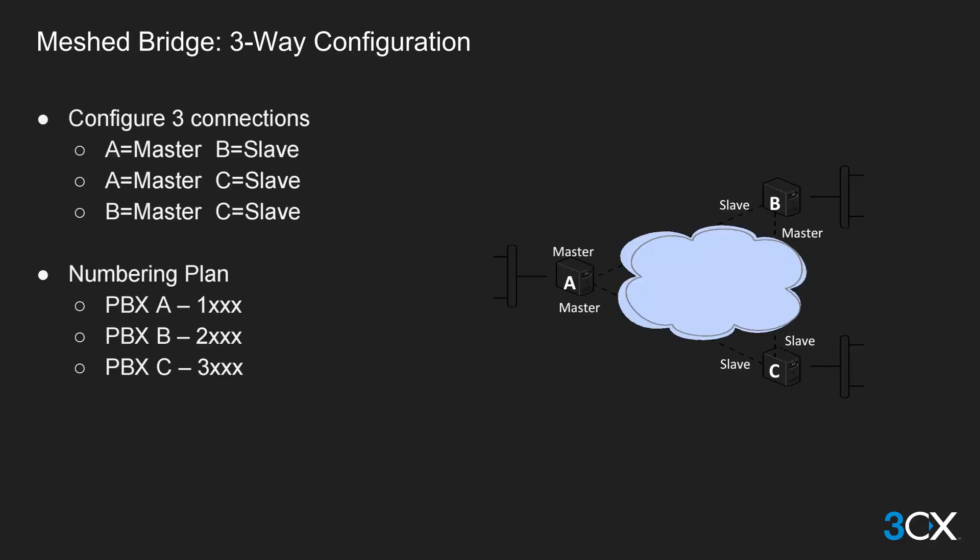For a fully mesh setup with three PBXs, each connection between all three PBXs needs to be configured. PBX A will be the master bridge for connections to both PBX B and PBX C. PBX B will be the master bridge for the connection to PBX C. PBX B is therefore a master bridge for one connection and a slave bridge in another — this is entirely feasible. A PBX does not need to be solely master or solely slave but can be either.